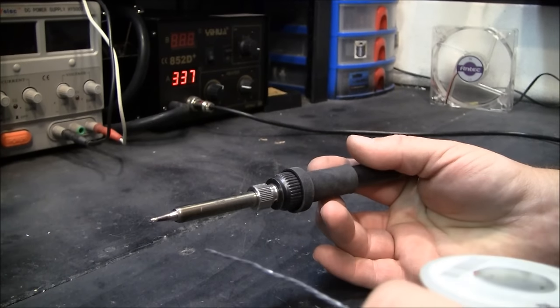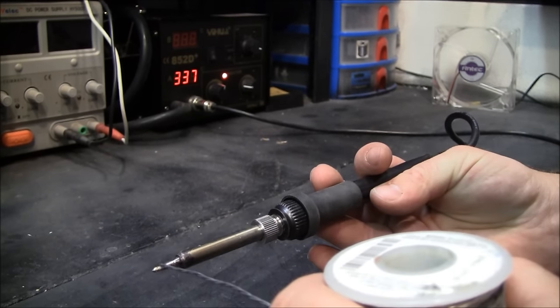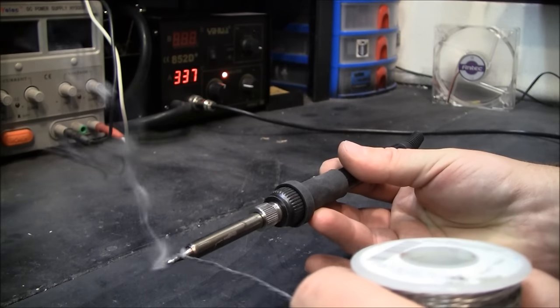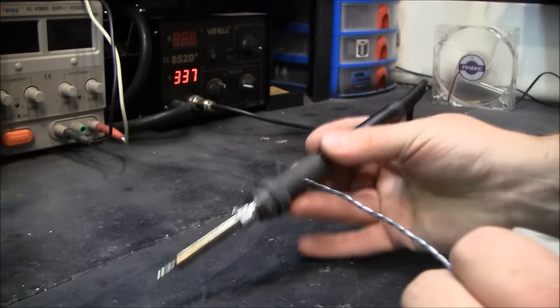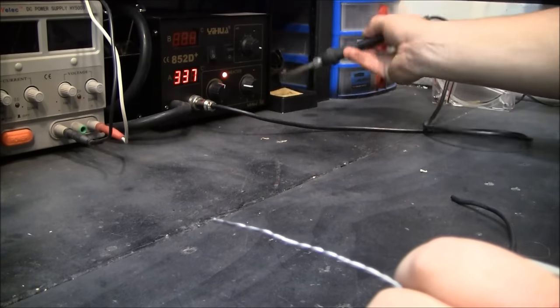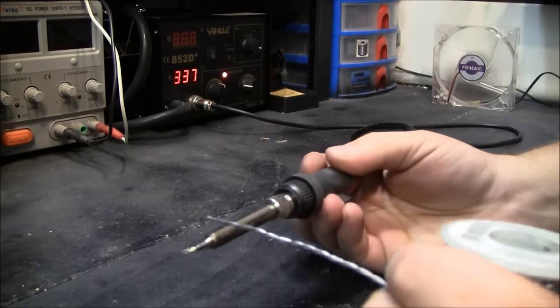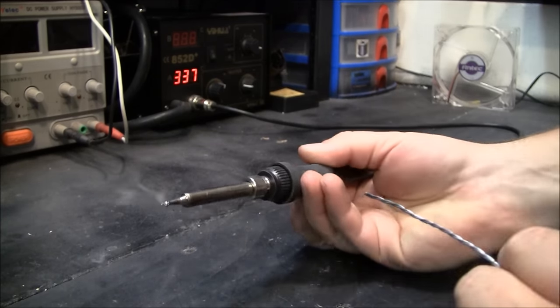One of the most important things is to take care of your soldering iron tip. And you do that by tinning the tip. You can take the excess solder off, or you can use your sponge. Once you get it cleaned and then tinned, you're ready to go.